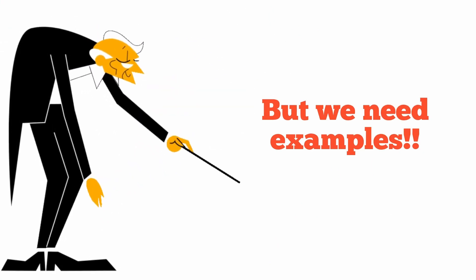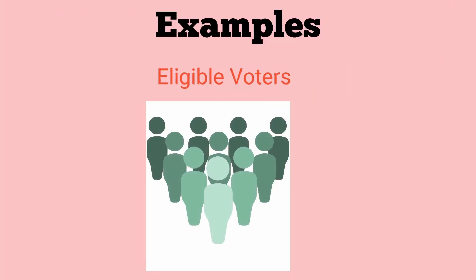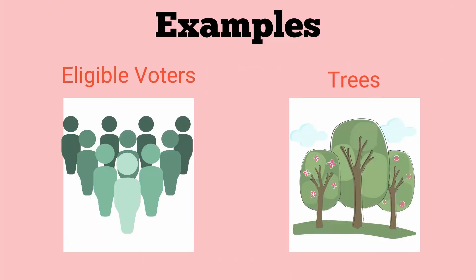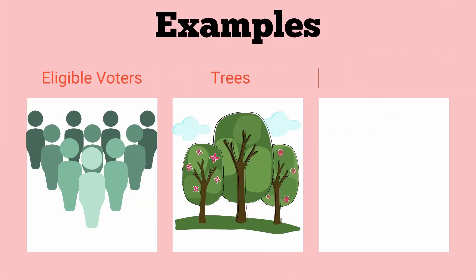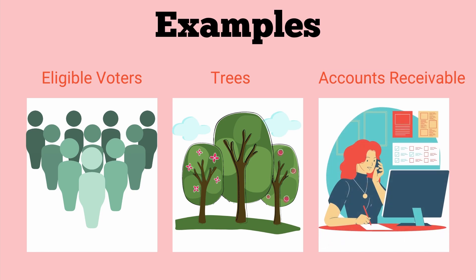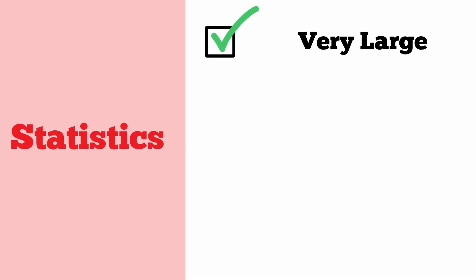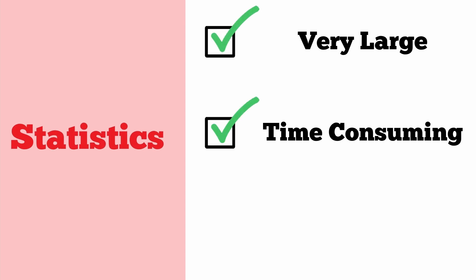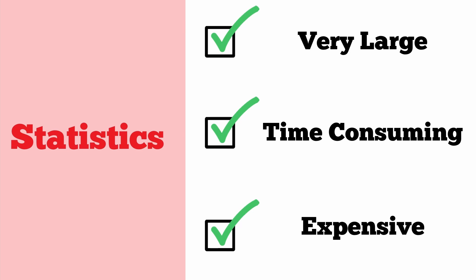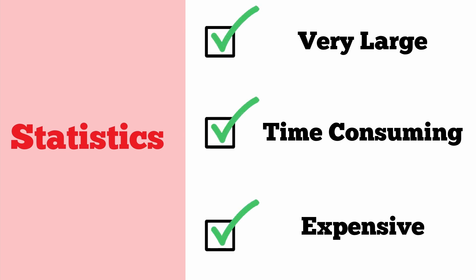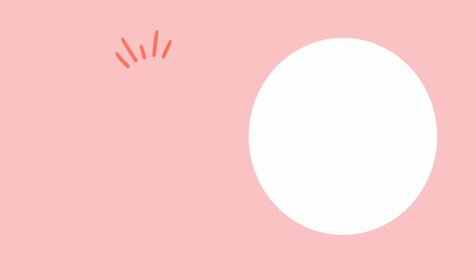The population of interest can be all eligible voters in a country, all the trees in a particular country, or all the accounts receivable of a certain firm. As you can see, a population can be quite large. Rarely do we collect data of all the members of a population, as it is very time consuming and expensive — but we still need to be able to make conclusions about the entire population.